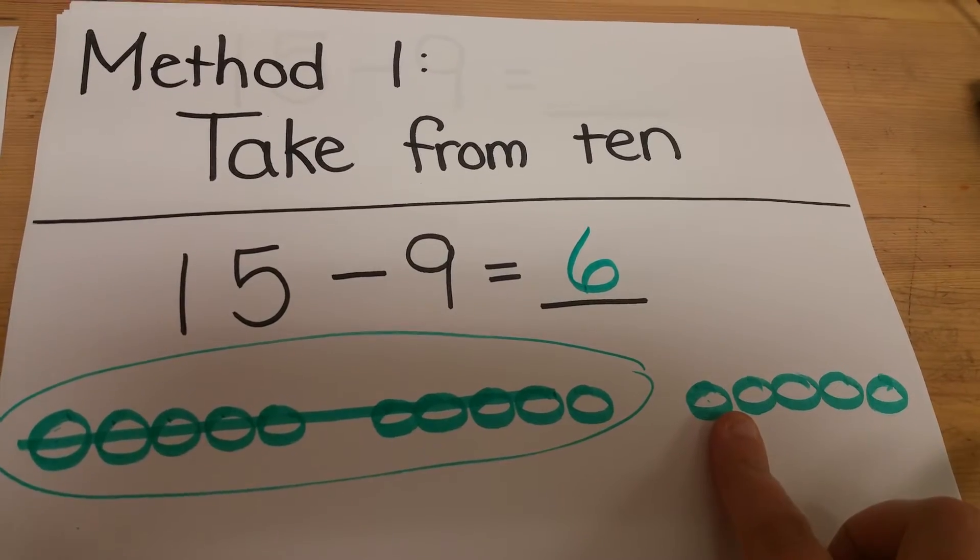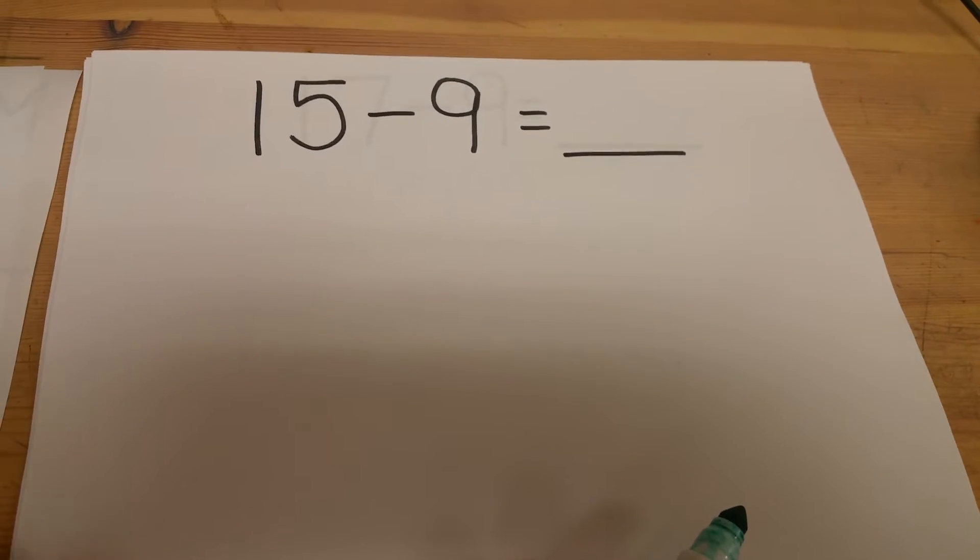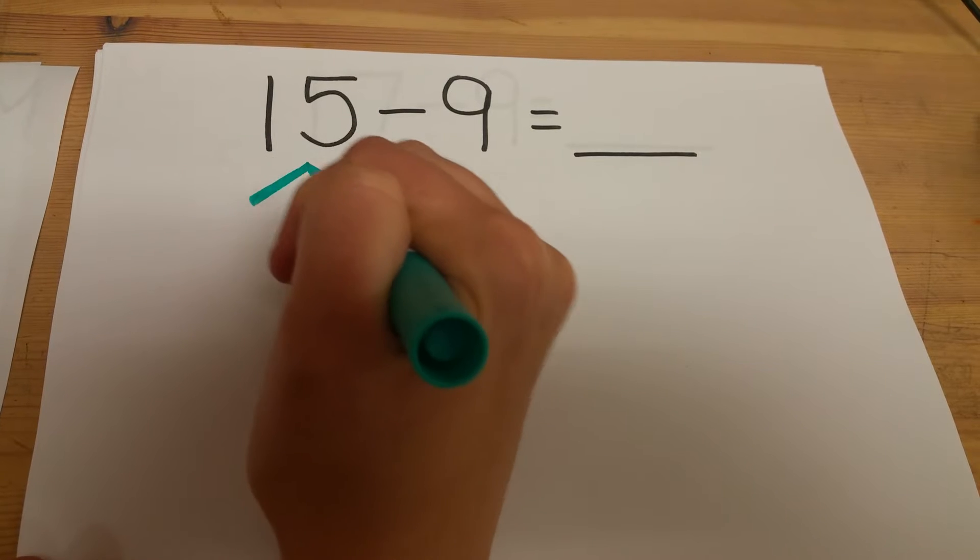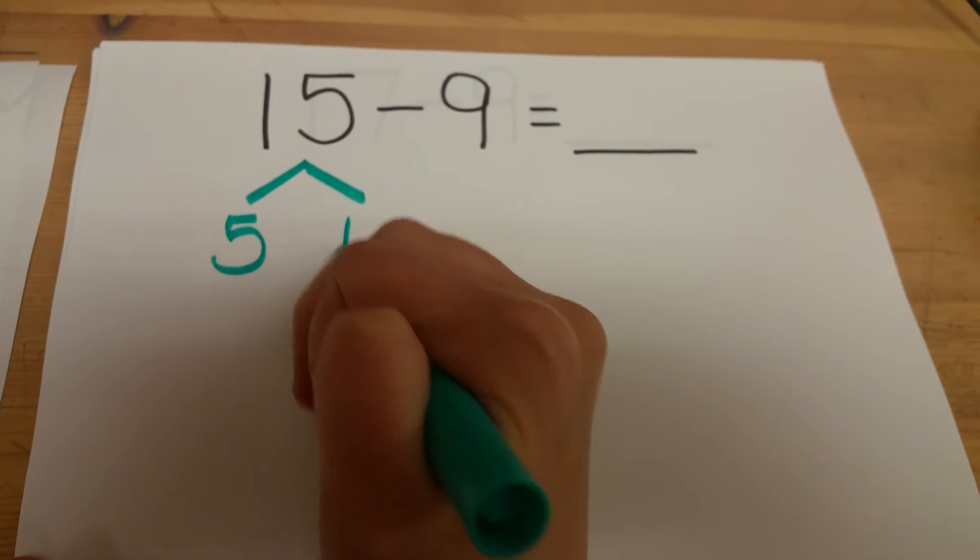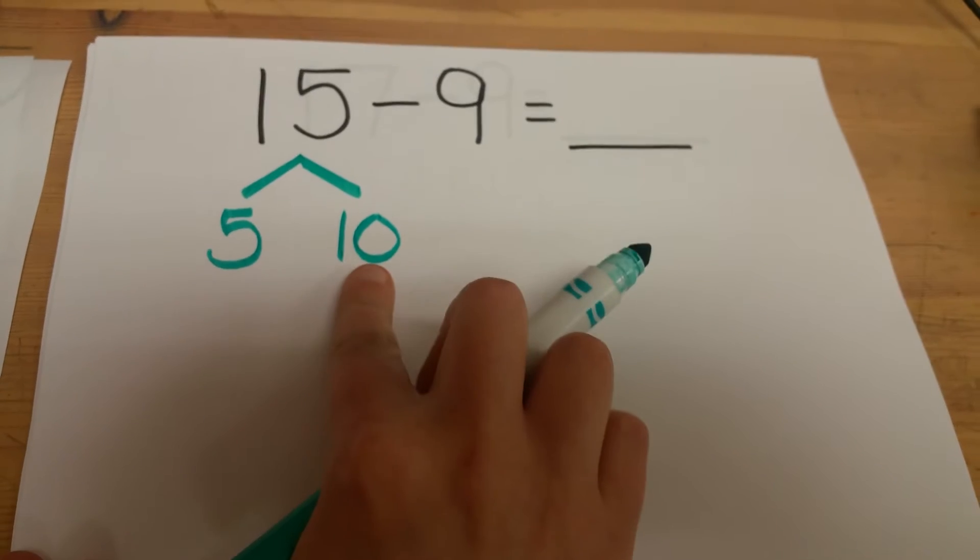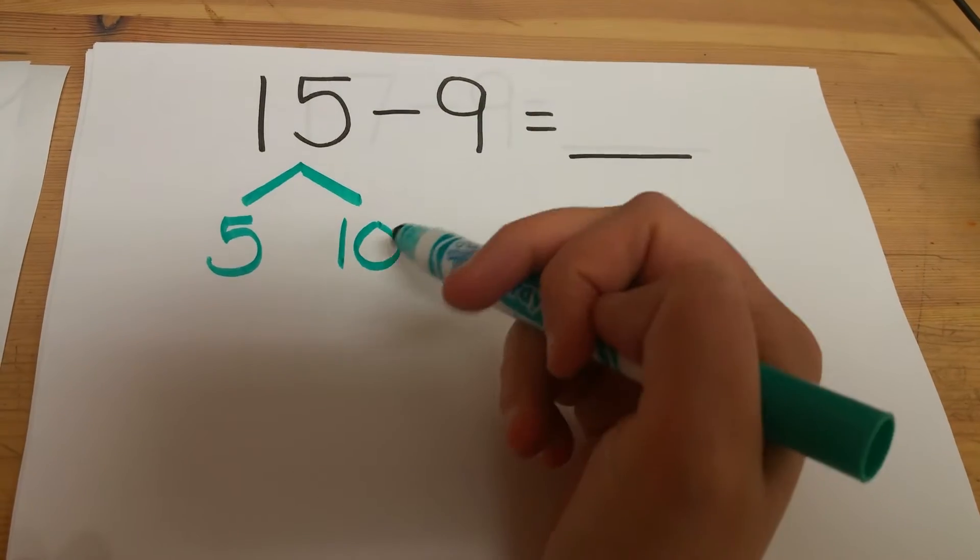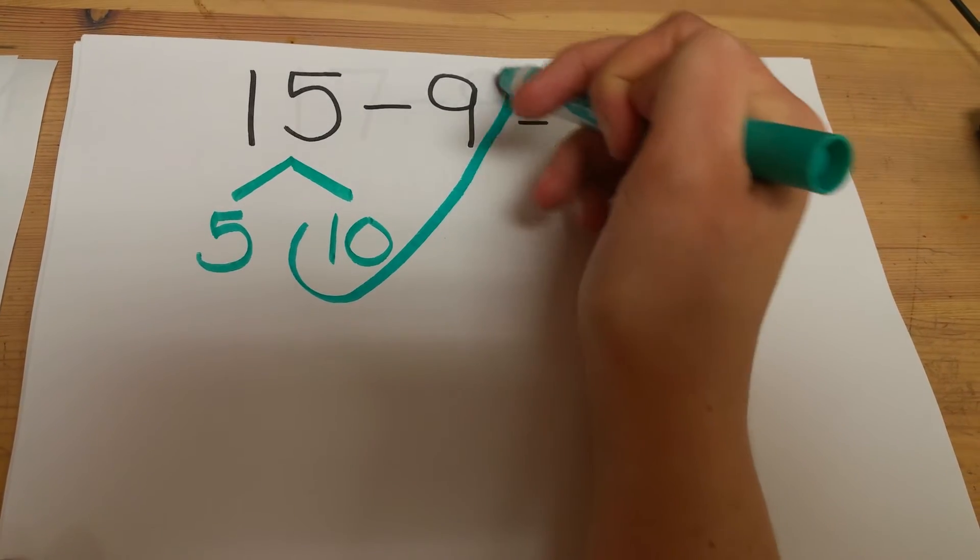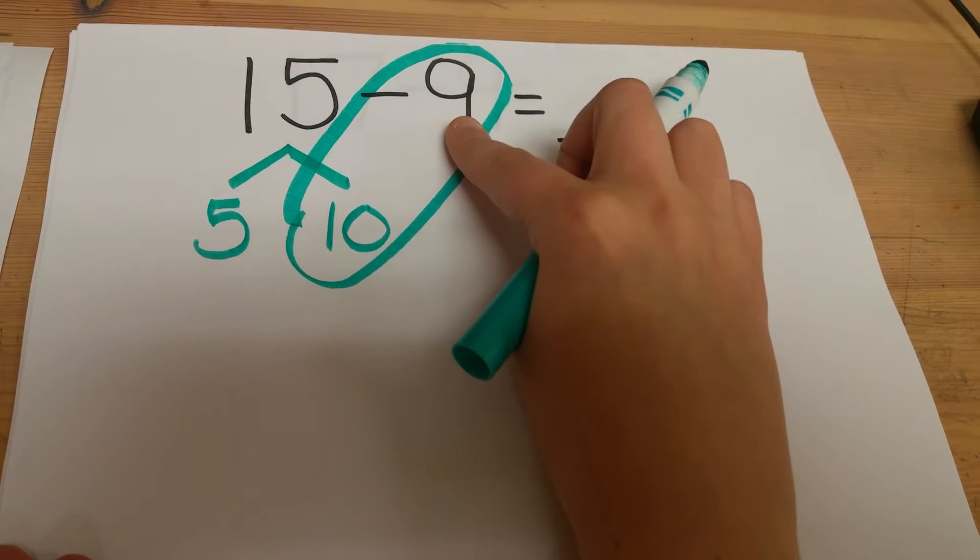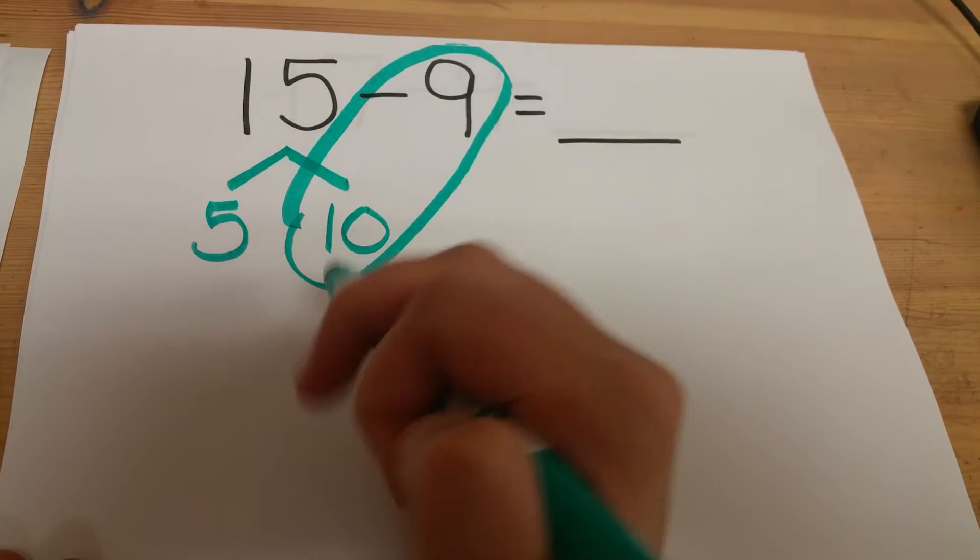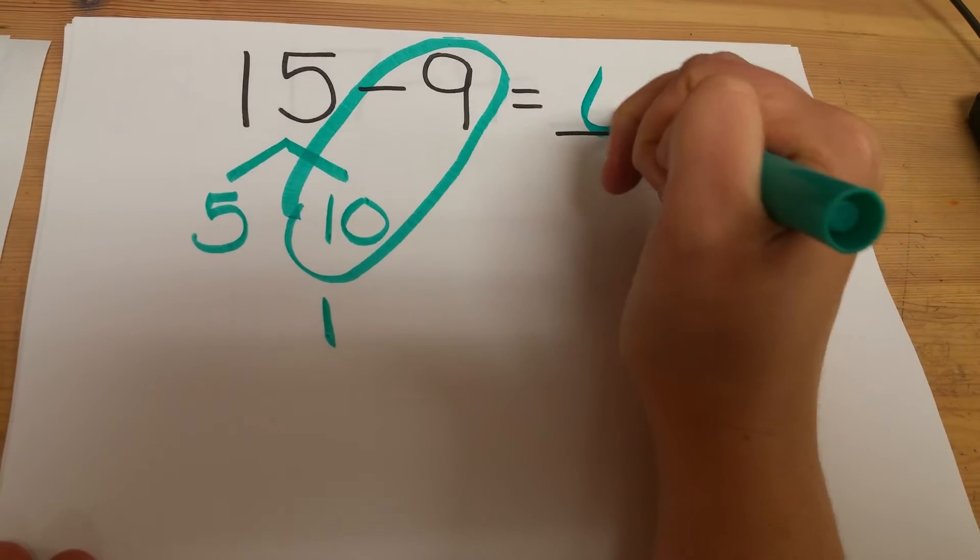Once they do it with the picture we move on to doing it with a number bond. Same problem 15 minus 9. You're going to split the 15 into 5 and the 10. I like to put the 10 on this side because I'm taking from the 10. To remind myself that I'm taking from the 10 I'm going to circle 10 minus 9 and solve it. 10 minus 9 they should already know. 10 minus 9 is 1 and then I add my pieces. 5 plus 1 to find my answer is 6.